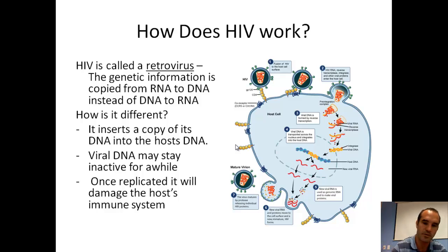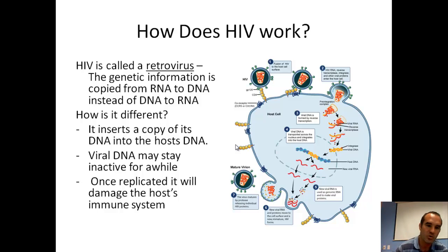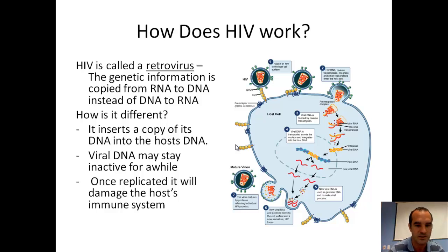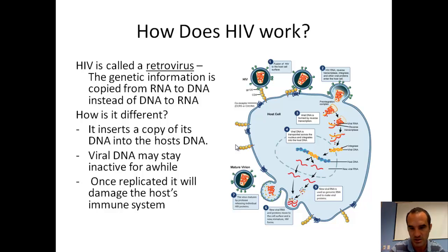You might have heard of HIV as a retrovirus. The difference between a retrovirus and a regular virus is that information goes from RNA to DNA instead of DNA to RNA. That's the 'retro' part of retrovirus — it just means it goes RNA to DNA. So HIV is going to do its RNA first, and then the RNA gets translated into a DNA code.